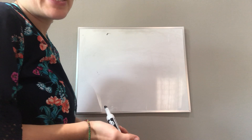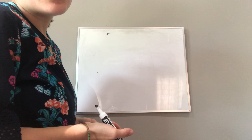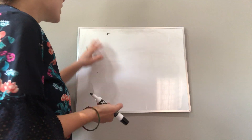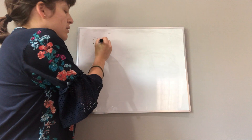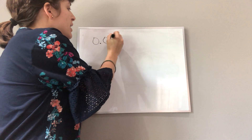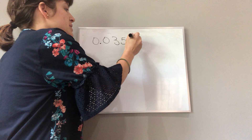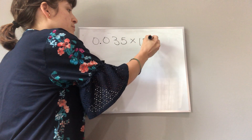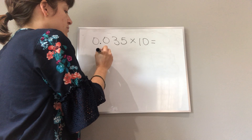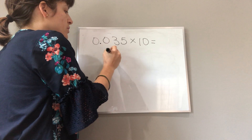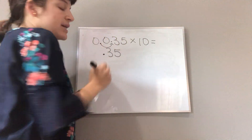Let's look at page 9 in your Singapore textbook, number 3. If you multiply thirty-five thousandths by ten, you get thirty-five hundredths. I'm moving the decimal place over one place value.